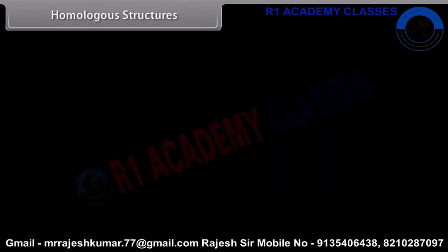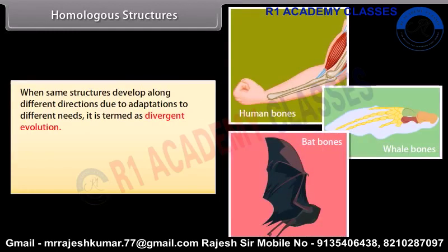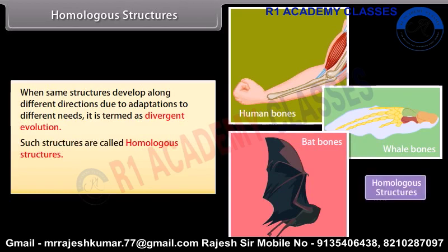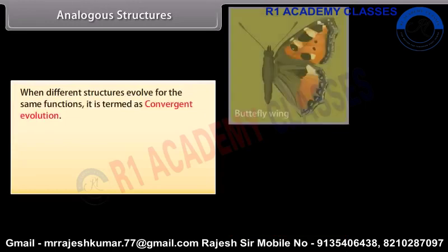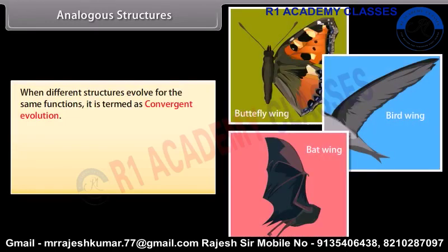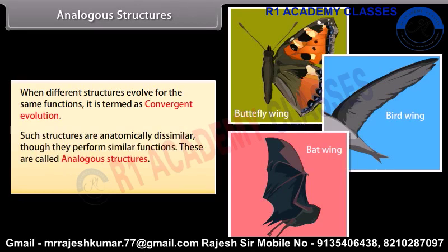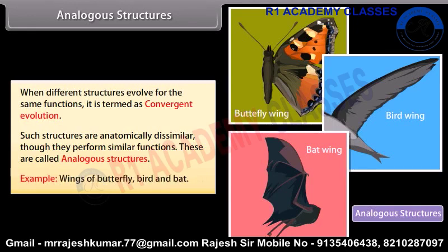Homologous Structures. When the same structures develop along different directions due to adaptations to different needs, it is termed divergent evolution. Such structures are called homologous structures. Example: bones of forelimbs of human beings, whales and bats are homologous. Analogous Structures. When different structures evolve for the same function, it is termed convergent evolution. Such structures are anatomically dissimilar though they perform similar functions — these are called analogous structures.